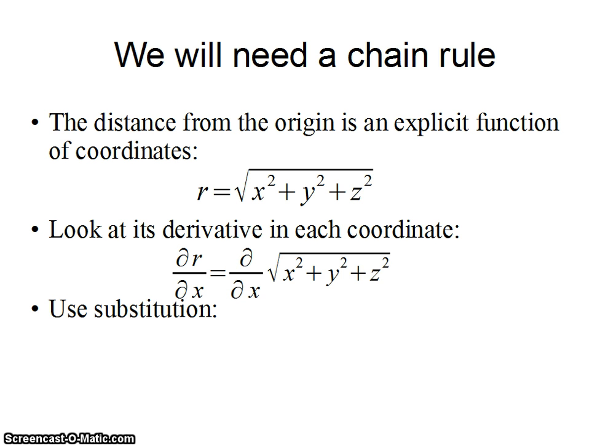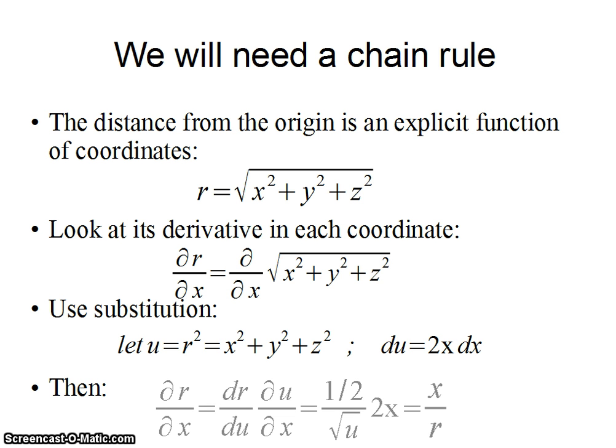Partial derivative of r with respect to x is the partial with respect to x of square root of x squared plus y squared plus z squared. Well, you know how to do that. You use substitution, where my substitution variable, which I generally call u, could also be called r squared, is x squared plus y squared plus z squared. And then the differential for u, du, is just 2x dx. You know how to do derivatives by now. So the partial derivative of r with respect to x, I can write as dr/du times du/dx. And when I do that out, I get x over r.